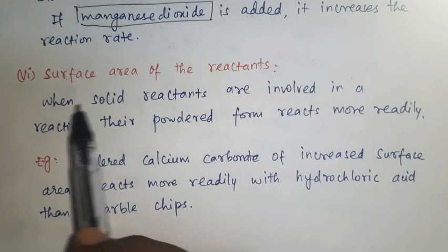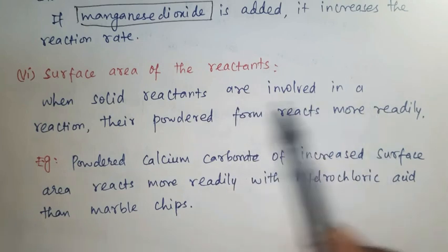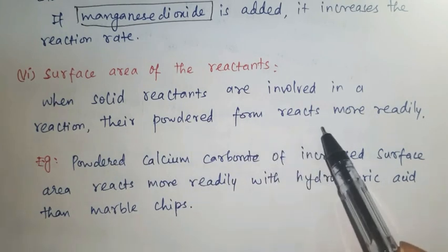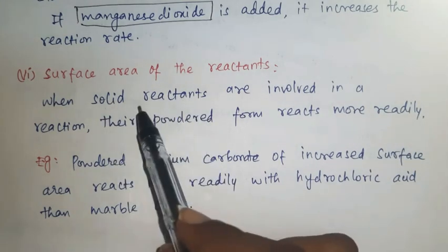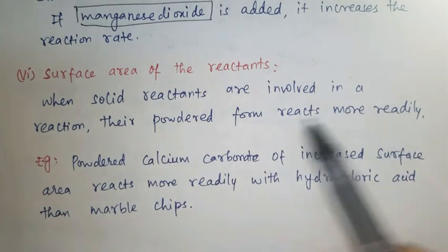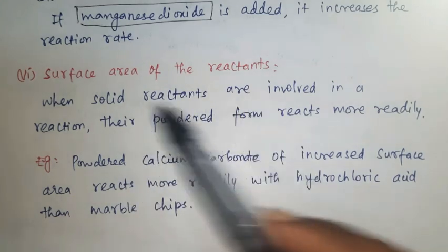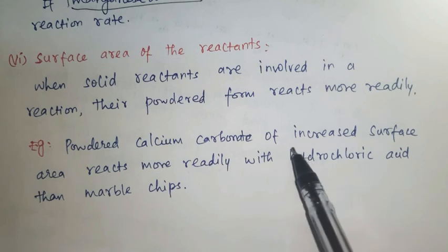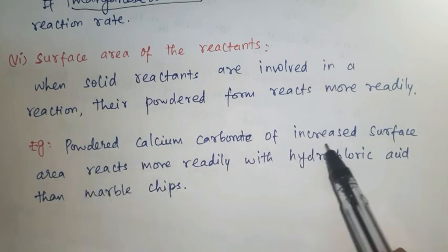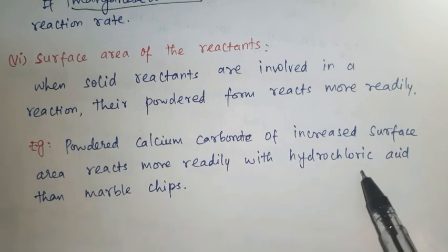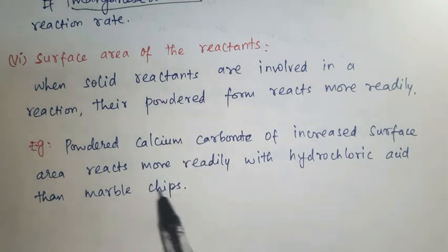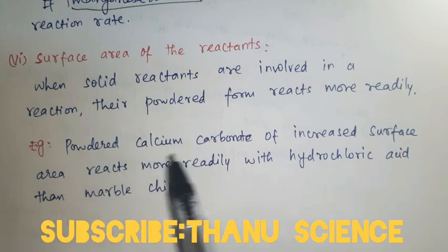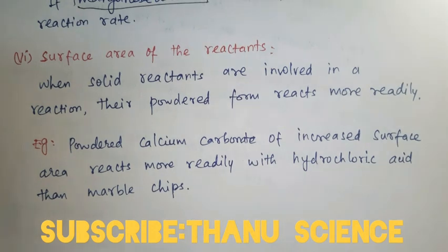Sixth factor: surface area of the reactants. When solid reactants are involved in a reaction, their powdered form reacts more readily, because in the powder form the surface area increases, and with increased surface area the reaction rate increases faster. For example, powdered calcium carbonate of increased surface area reacts more readily with hydrochloric acid than marble chips. Dear students, don't forget to see the answers for question numbers 4 and 5 of this section in another video. Thank you, students.